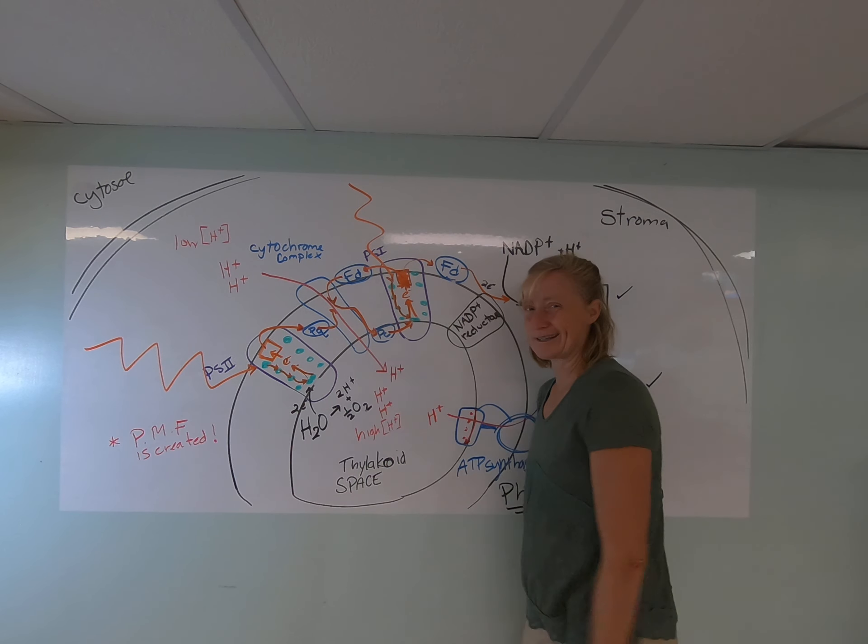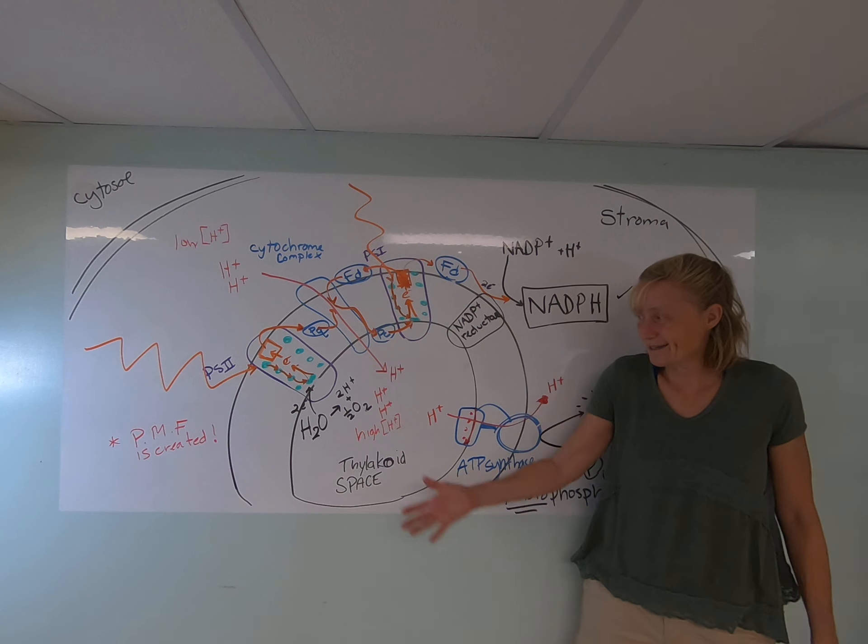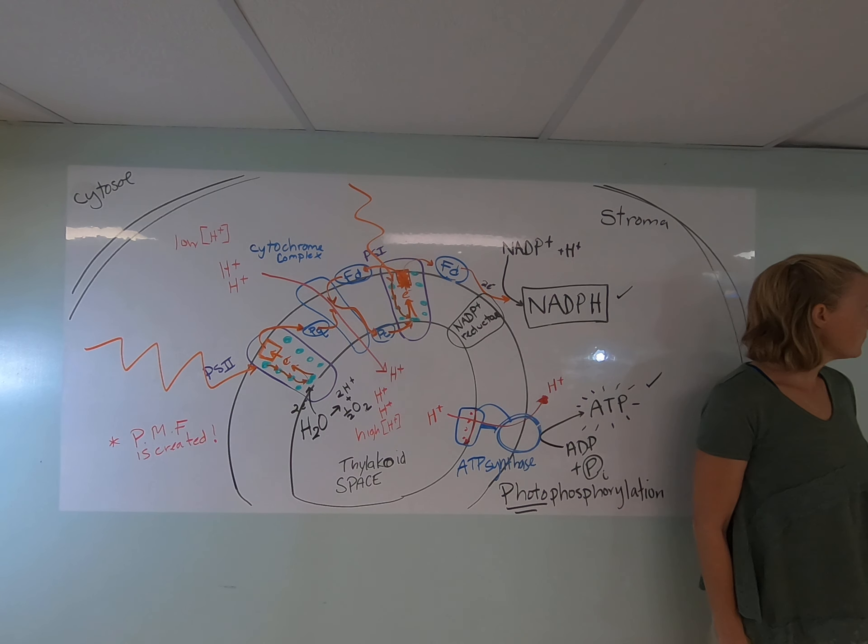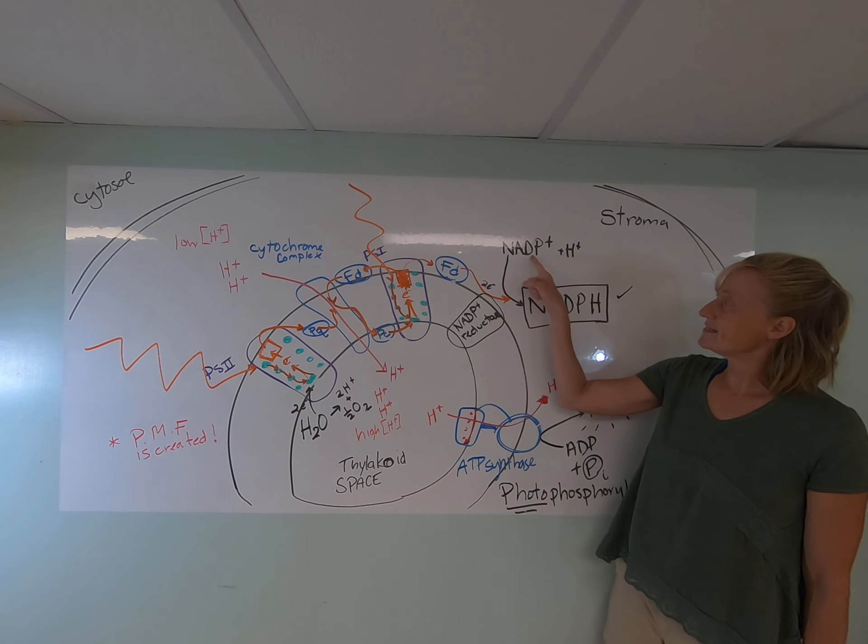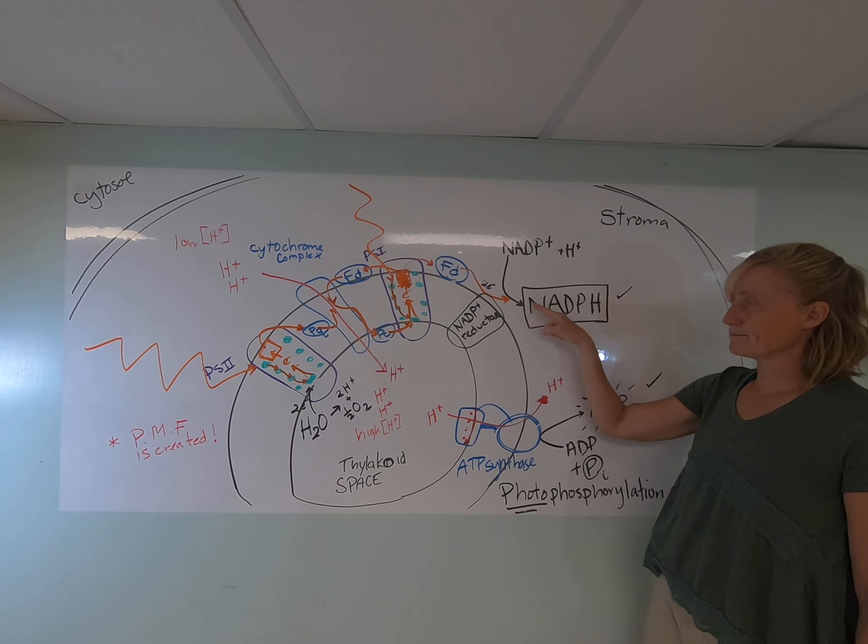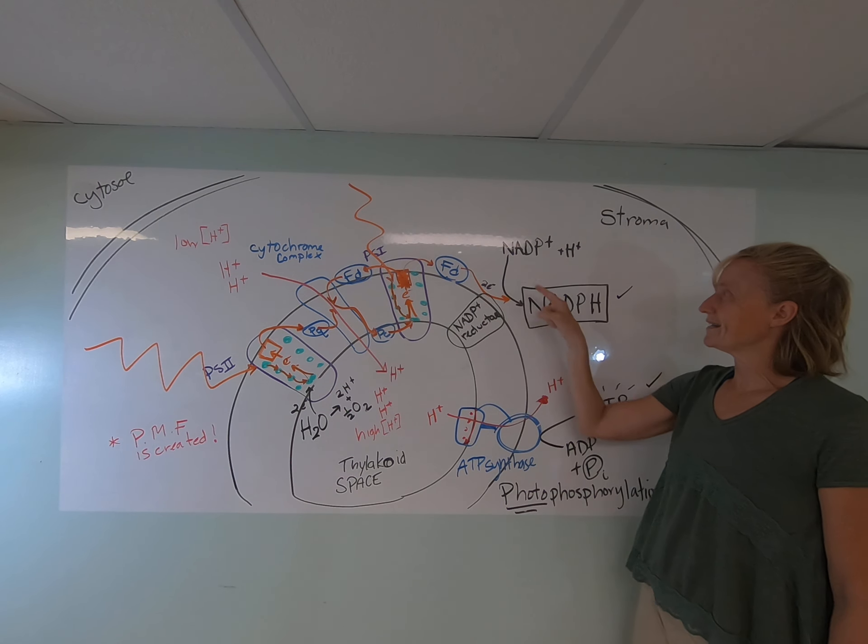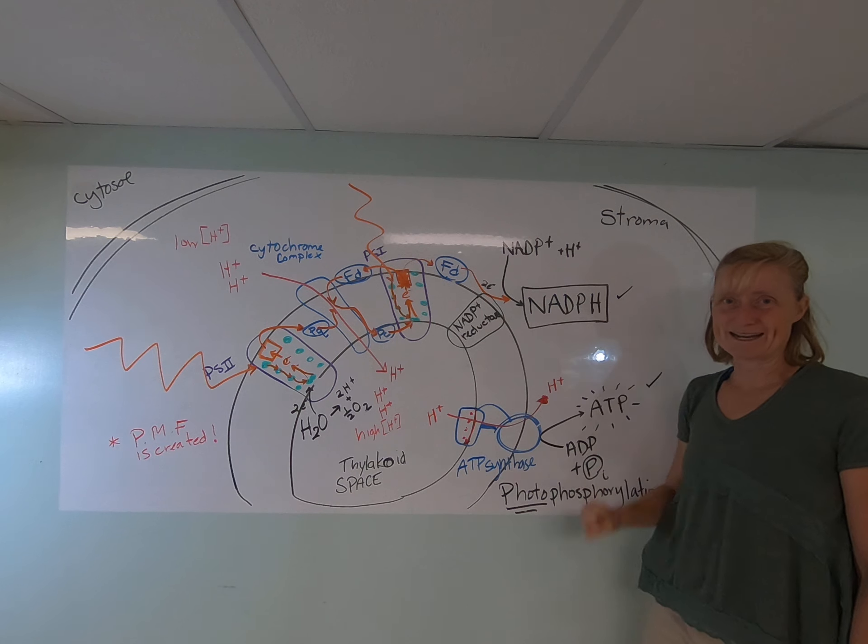Oxygen is our byproduct of photosynthesis. It's not really intended. It's just there. ATP is produced at the thylakoid membrane. It sure is by photophosphorylation and NADPH is produced by accepting electrons. All right. It is reduced to make NADPH.